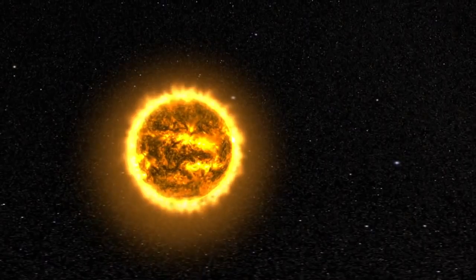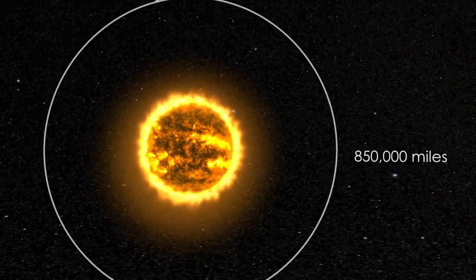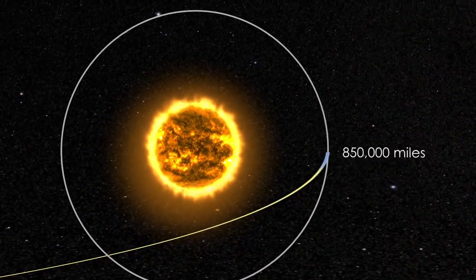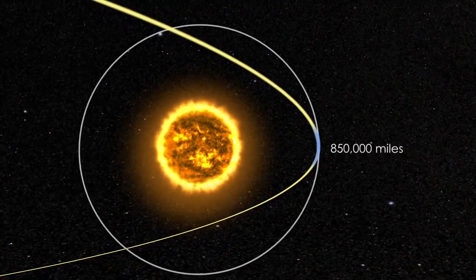To be considered a sungrazer, a comet needs to get within about 850,000 miles from the Sun at perihelion. Many come even closer, even to within a few thousand miles.